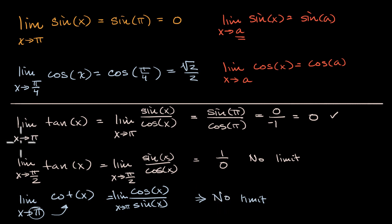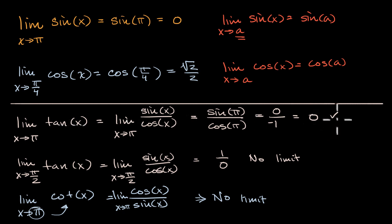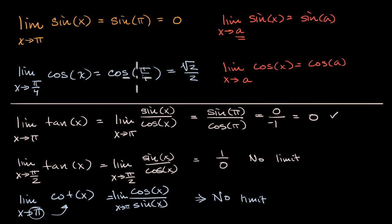When the value we're approaching is in the domain of the trigonometric function, we're going to have a defined limit. Sine and cosine in particular are defined for all real numbers and continuous over all real numbers, so for any limit you take with them, it will be defined and equal to the value of the function at that point.